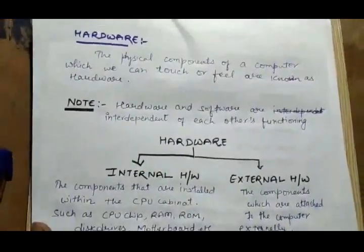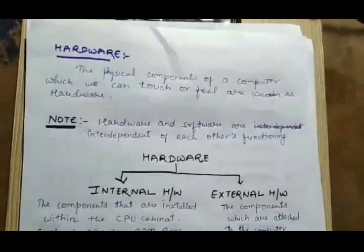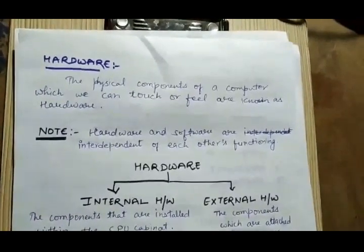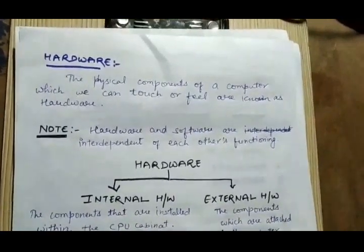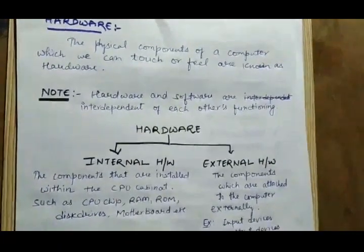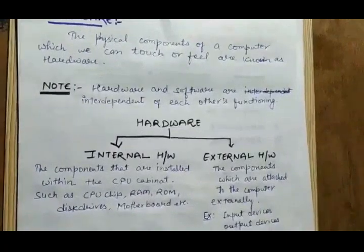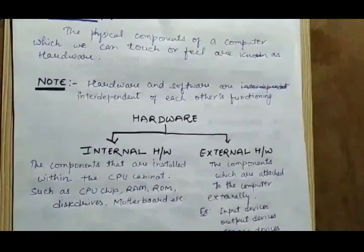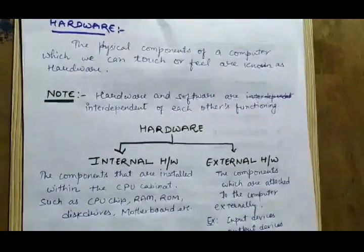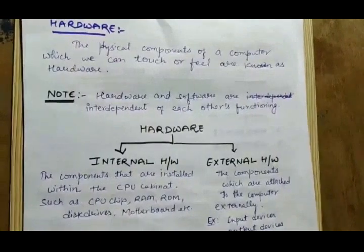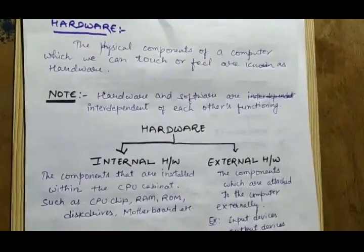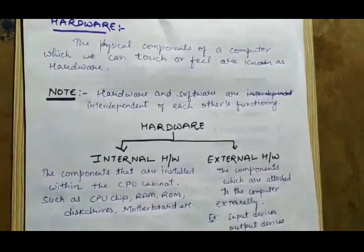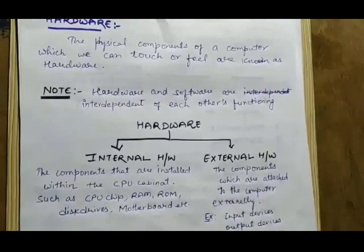Now let's move to hardware. Hardware is the physical component of a computer which we can touch or feel. All parts of a computer that we can touch, see, and feel are known as hardware — including input devices, output devices, storage devices, and components inside the CPU cabinet. Both hardware and software are interdependent on each other; because of hardware the software works and because of software the hardware works. If one is missing, the computer is useless.